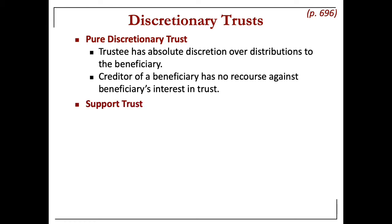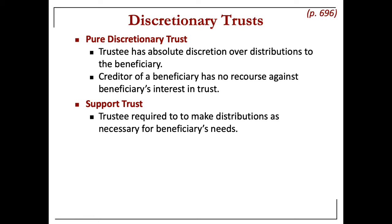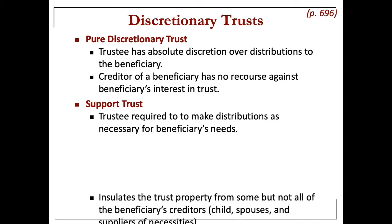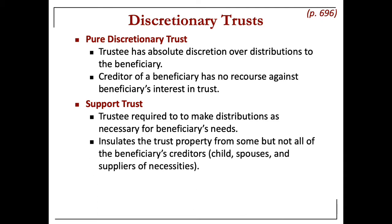The next type is a support trust. Here, the trustee has some requirements to make distributions that are necessary for the beneficiary's needs. Usually this is where you see words like 'for comfort and support' — if you see those words, you probably have a support trust. Support trusts are required to make distributions.